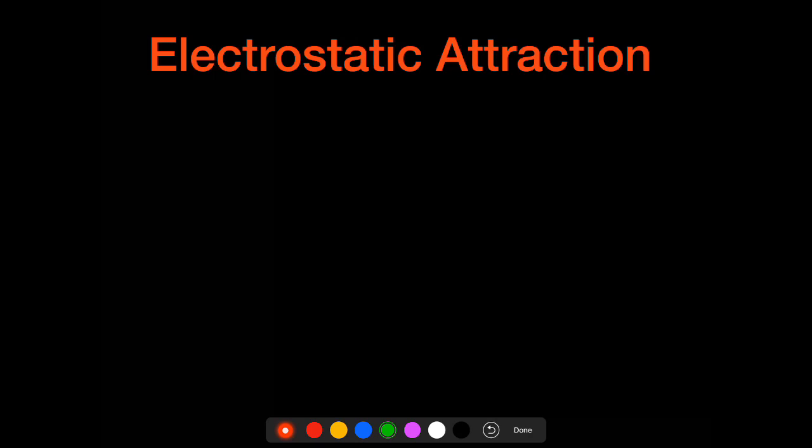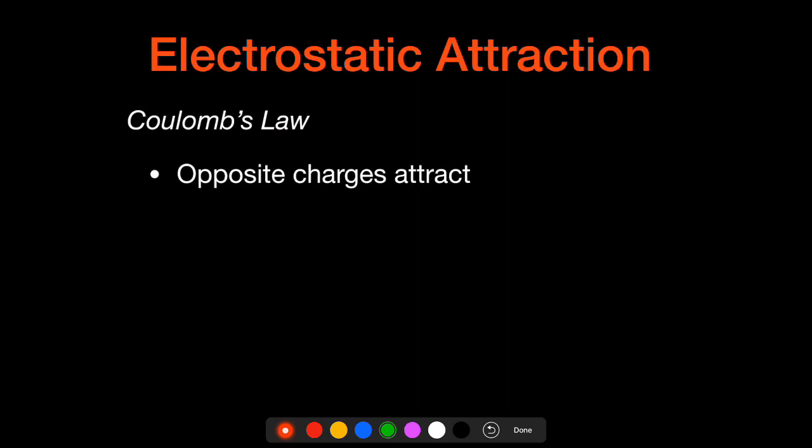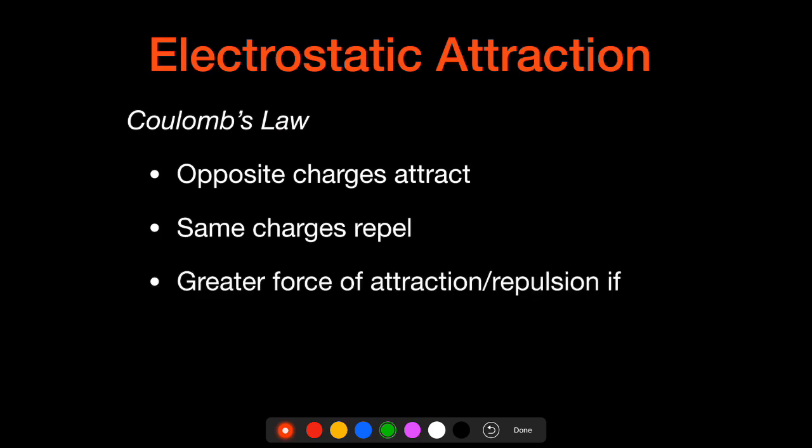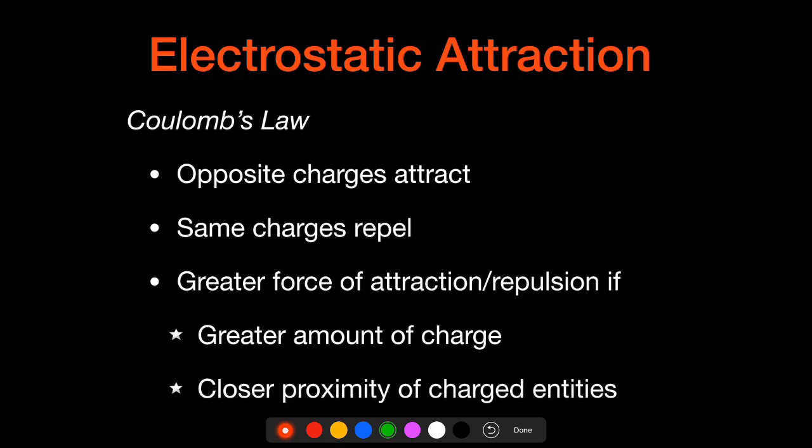We've already taken a look at electrostatic attraction a little bit with Coulomb's Law. We know that opposite charges attract and same charges repel. And we have a greater force of attraction or repulsion if there's either a greater amount of charge or closer proximity of the charged entities. When we think about what's going on with the periodic table in conjunction with charge amounts versus charge proximity, that's where all of these different trends are originating from - the interactions. Now it becomes a little more problematic because we have lots of protons and electrons that are going to be interacting.